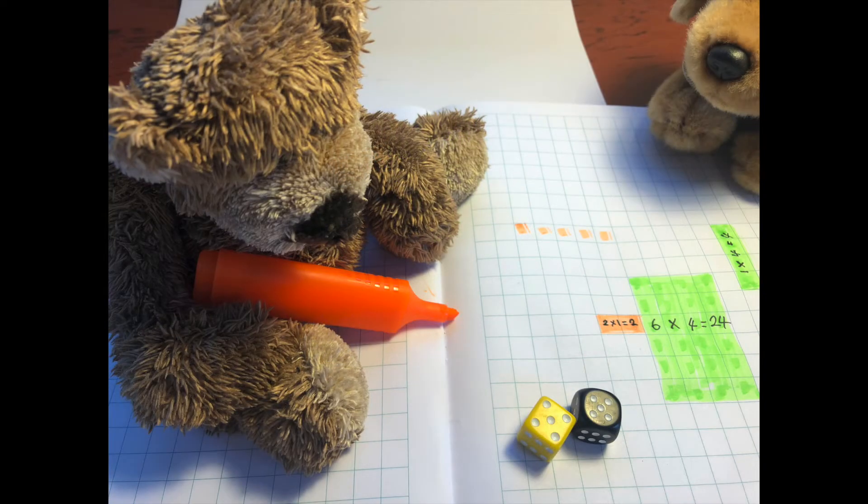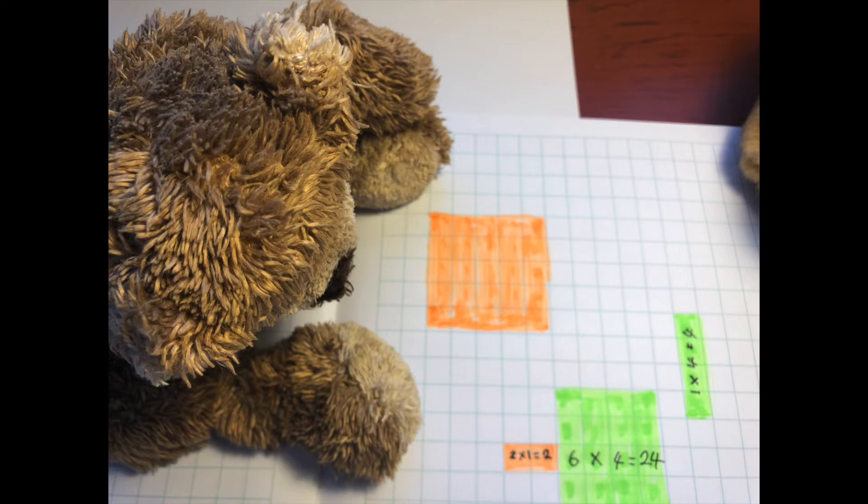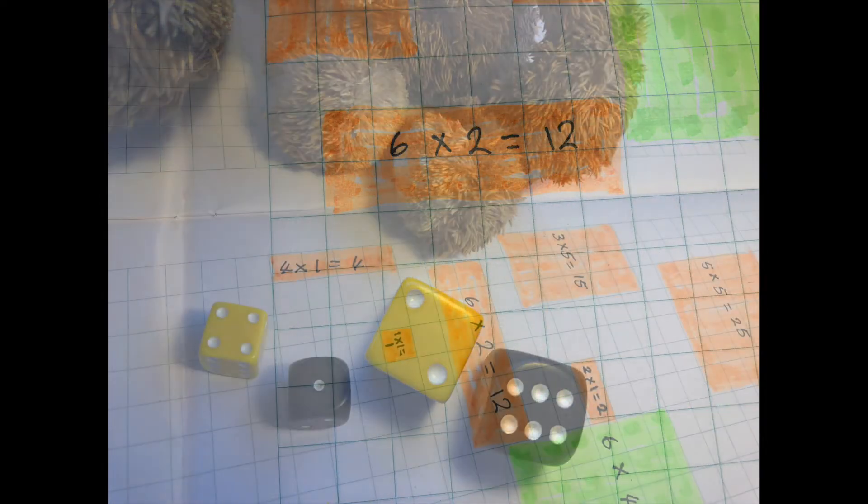Will this array have four equal sides? We call this array a square. Who is winning? Murphy or Monty?